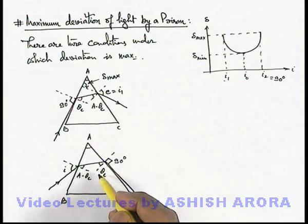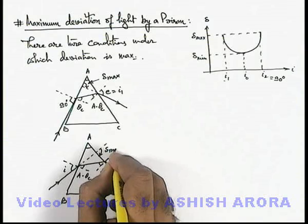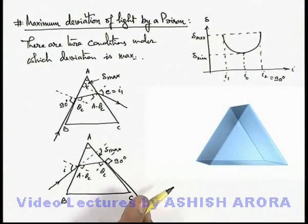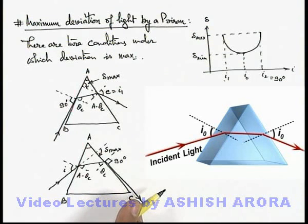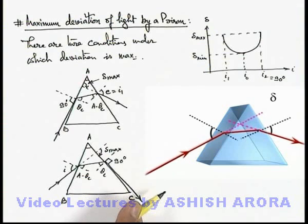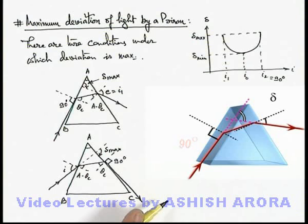The 2 situations are mirror images of each other, and here we can see this was the original direction of light, and this is the value of delta max which will remain the same in both situations. In this situation, when a light ray is incident onto the prism such that the incidence angle or emerging angle are equal, the deviation angle is minimum. Now if the incident angle is increased — when it reaches 90 degrees, or the incident ray is grazing along the surface — the deviation angle is maximum, reaching up to the value of delta max.